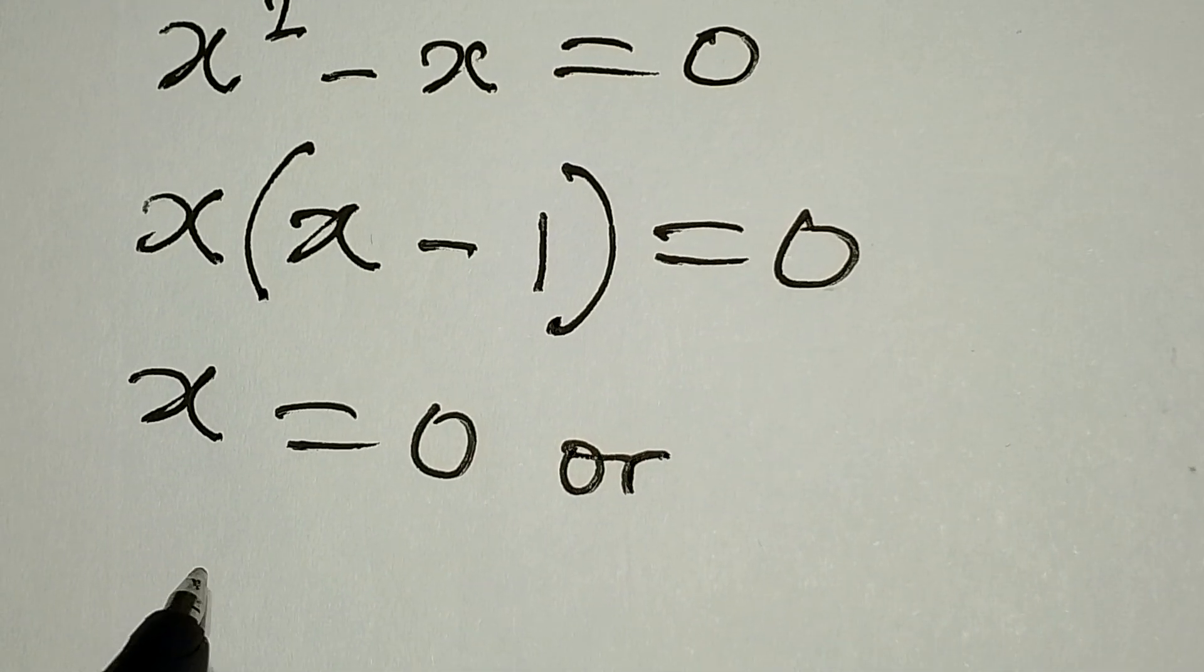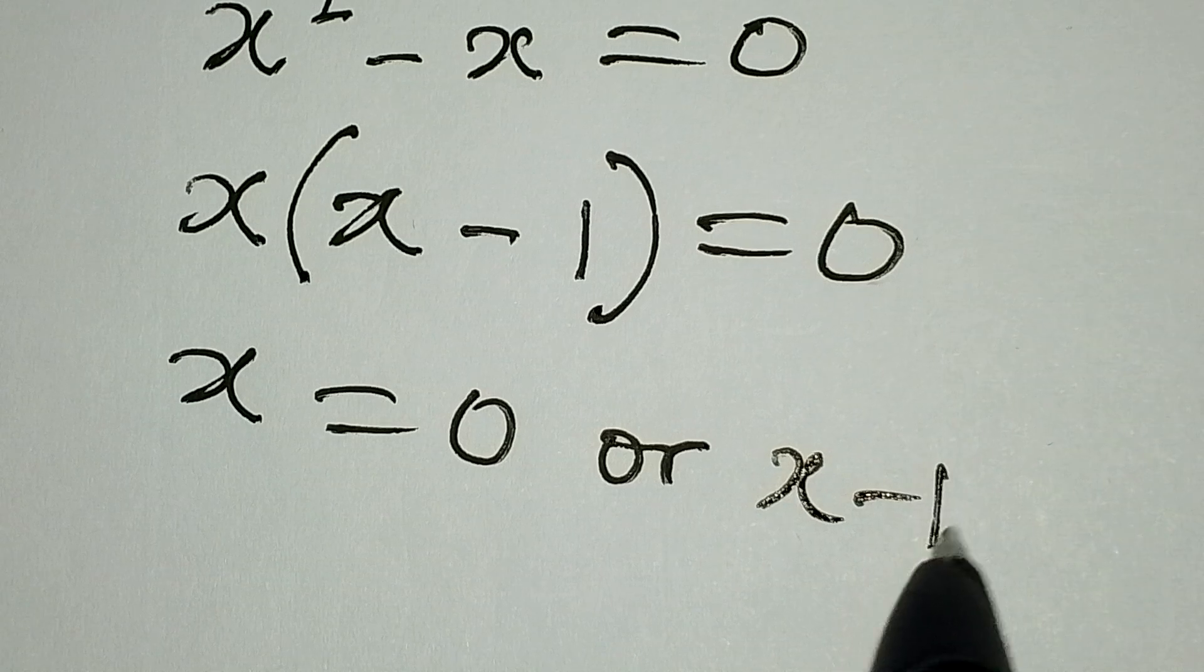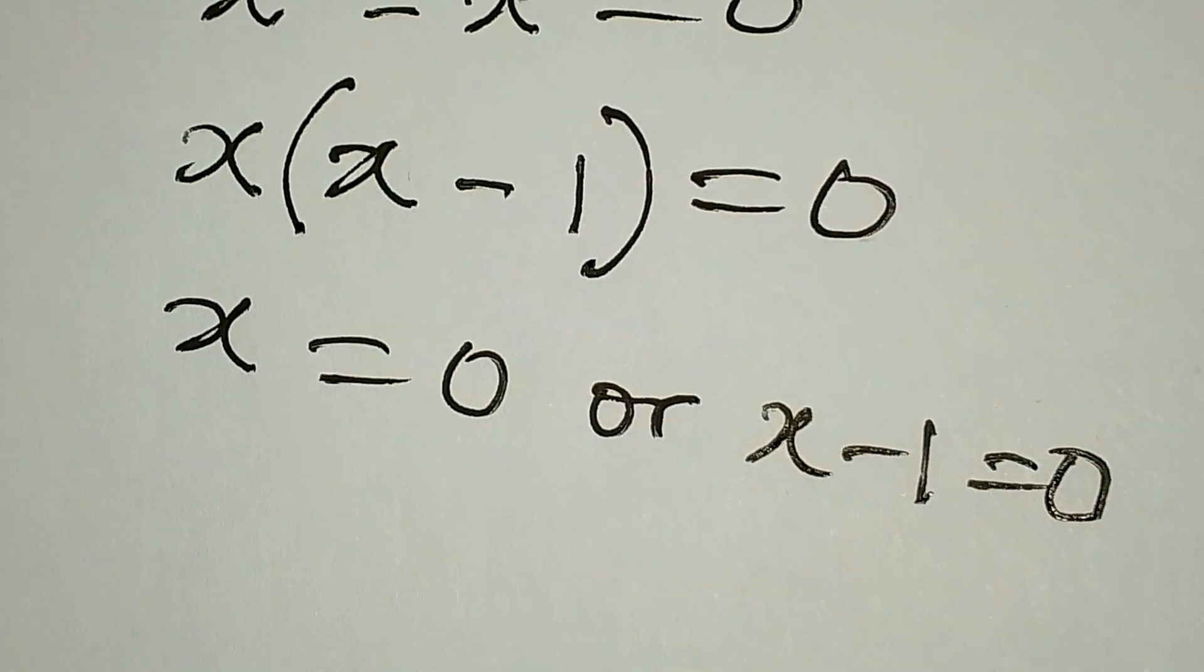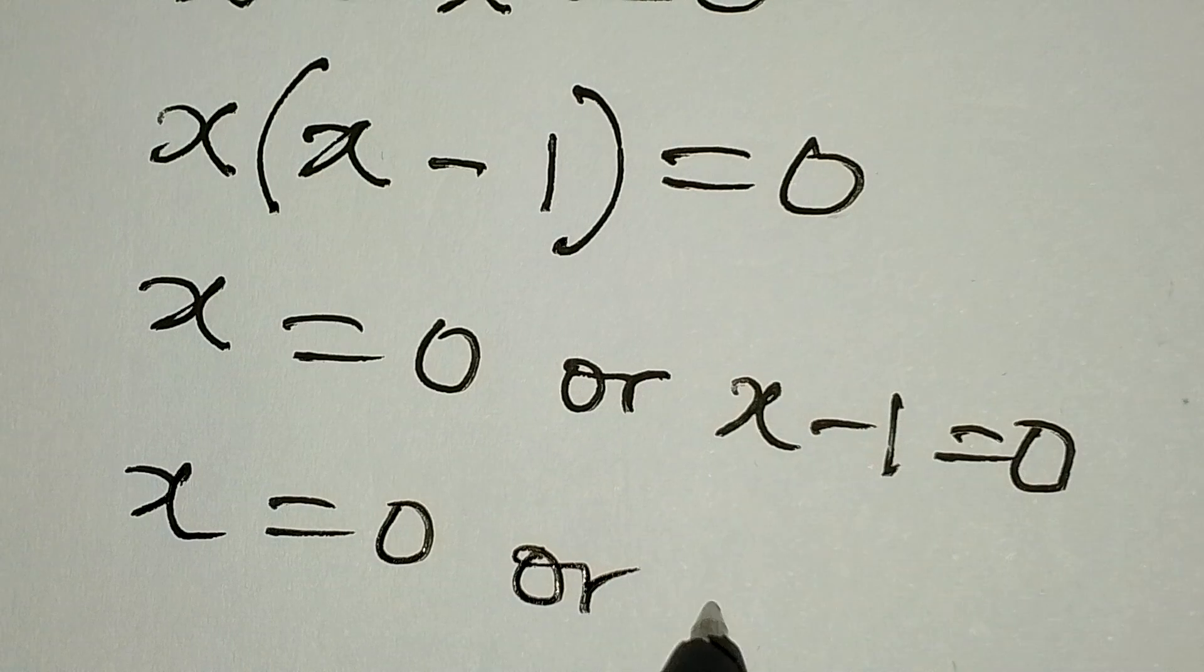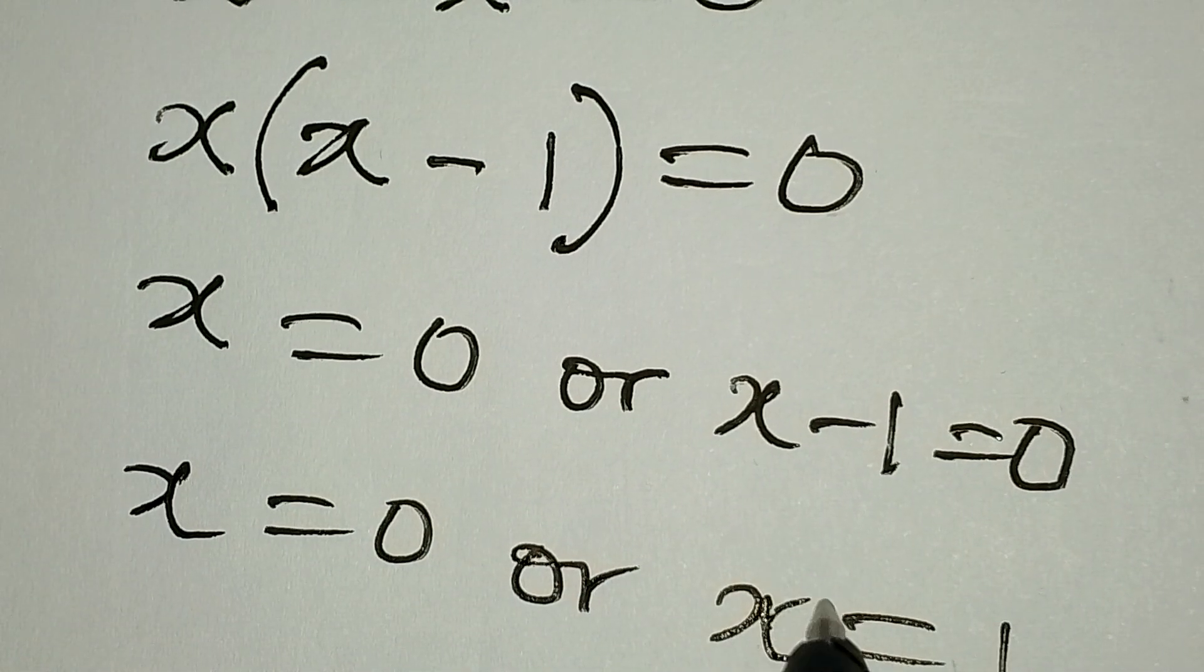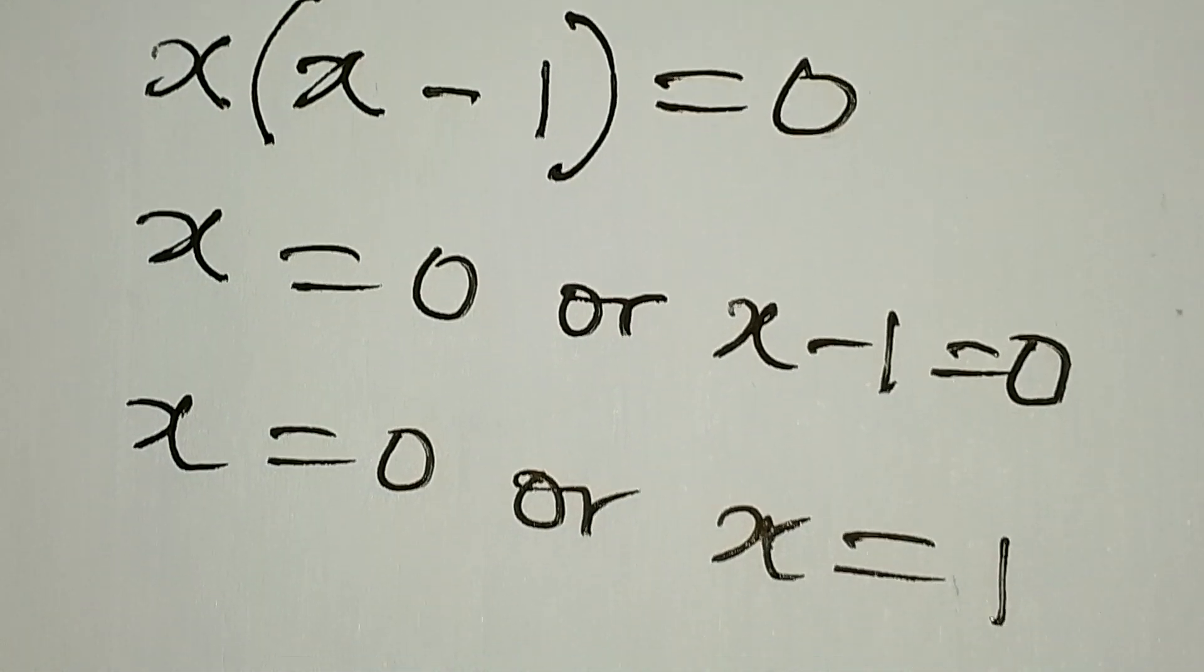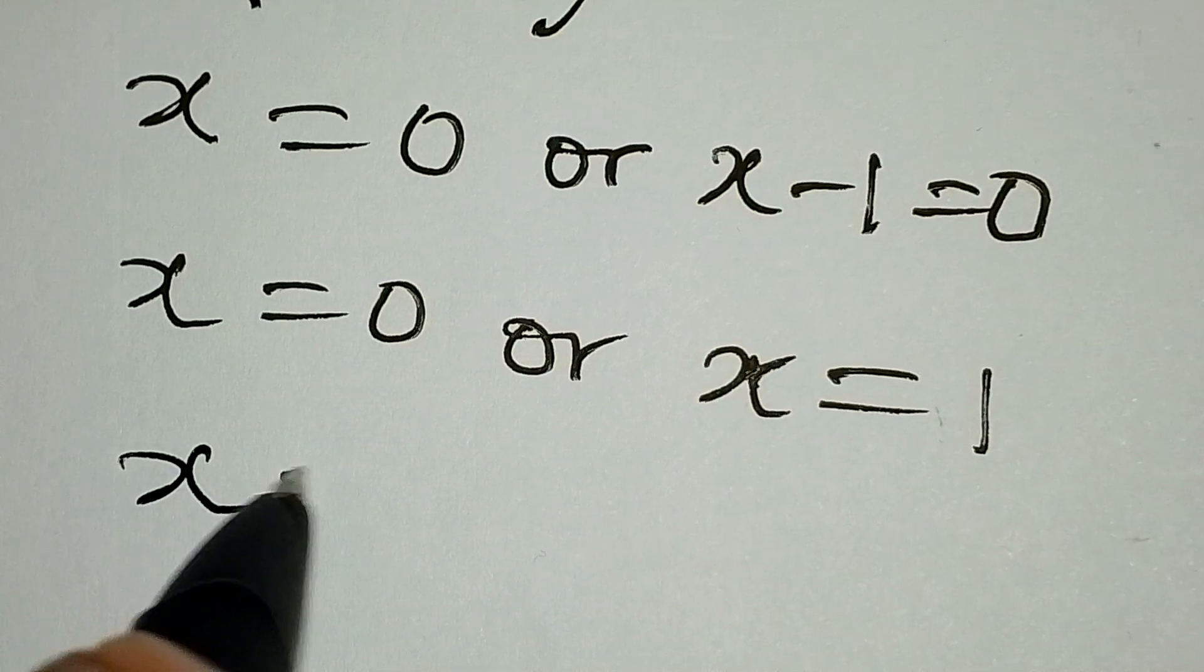X from here remains zero, or x is equal to one because this will give us zero plus one.